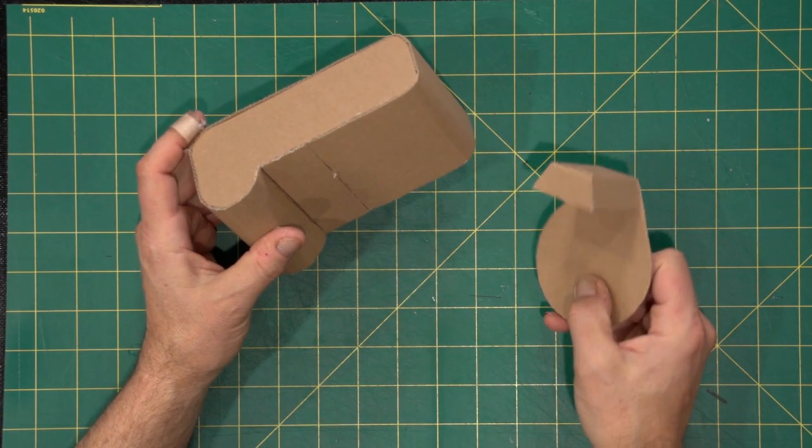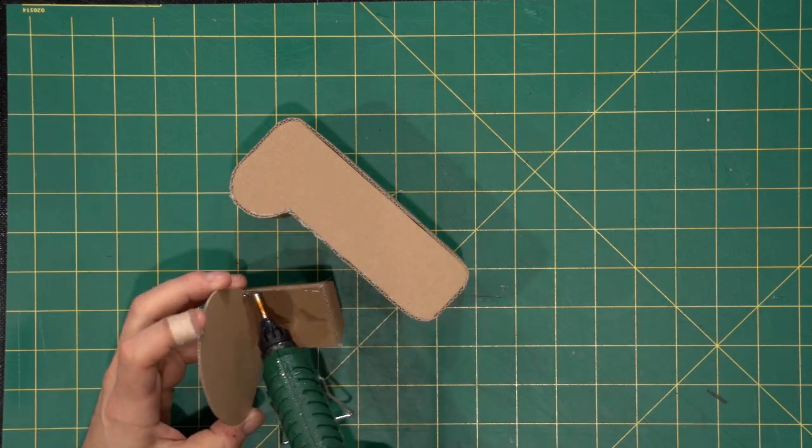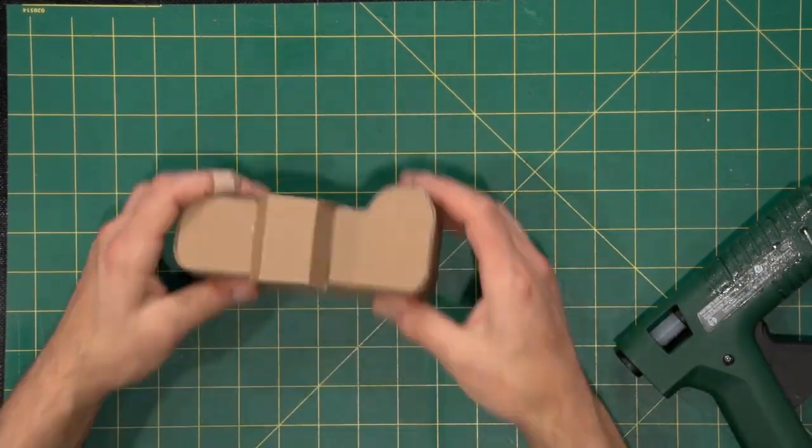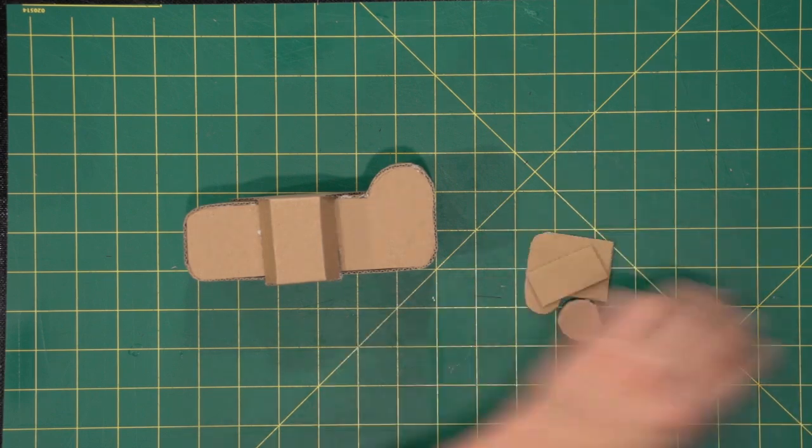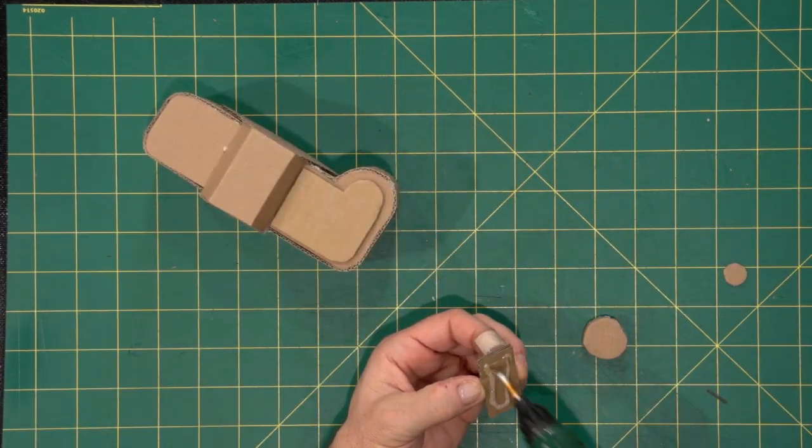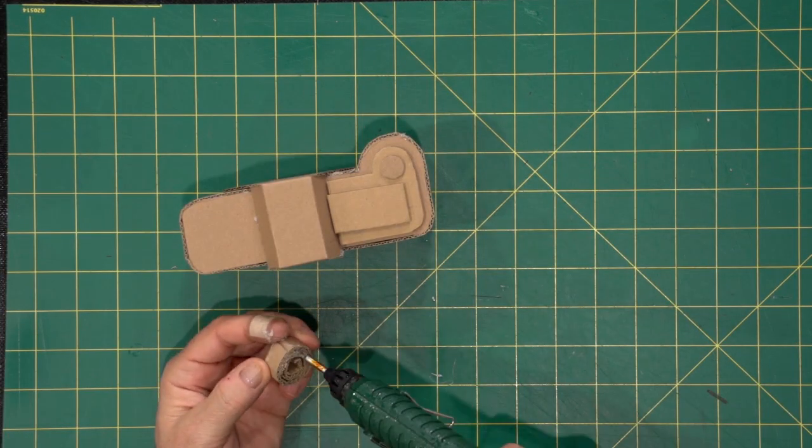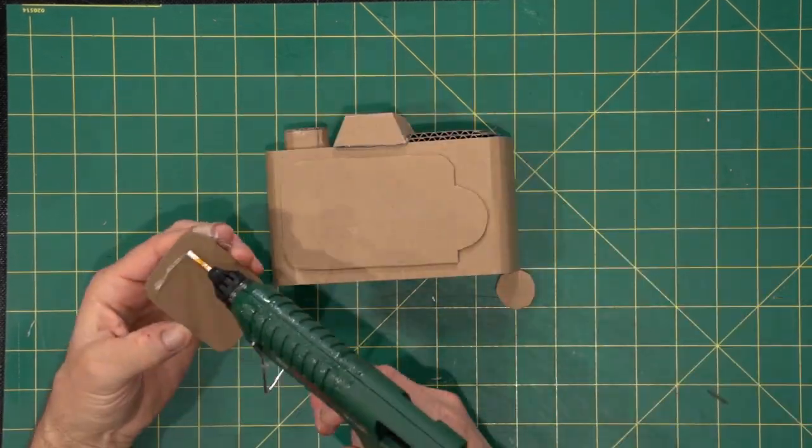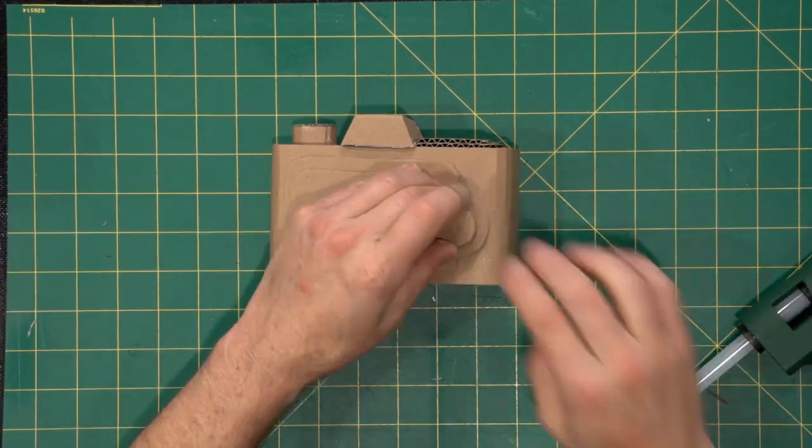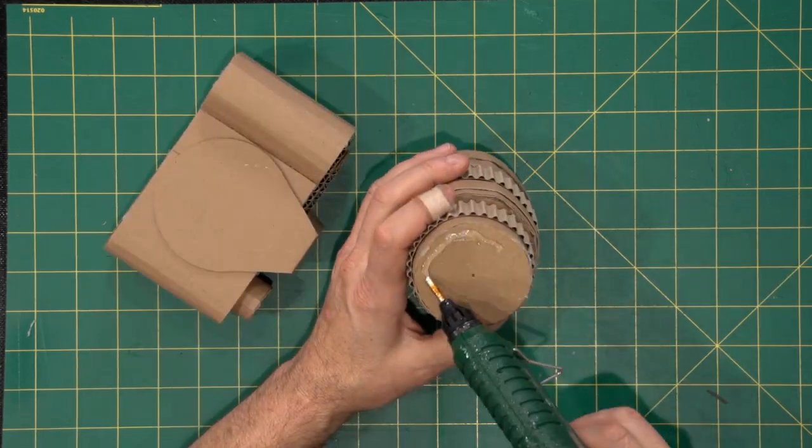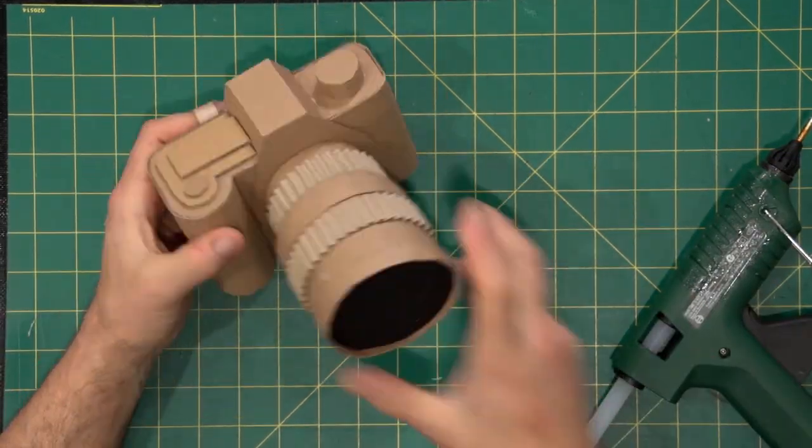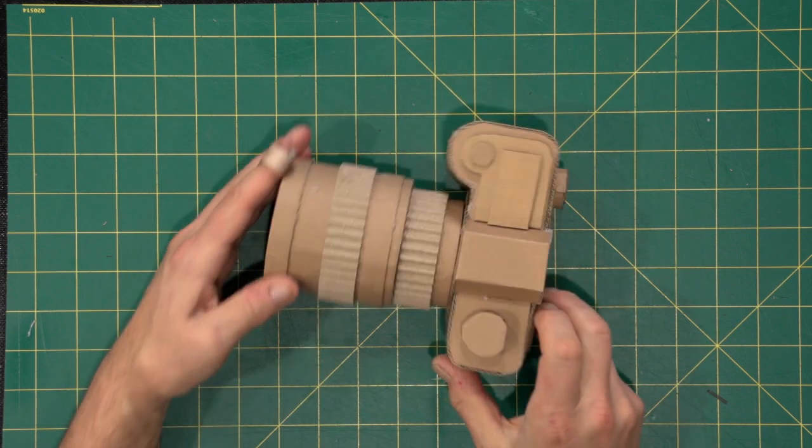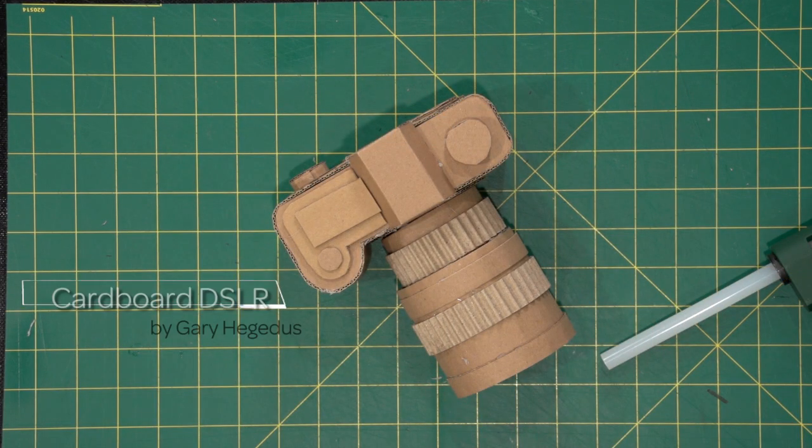First thing to go on is the viewfinder assembly. Then we're ready to put the top components on: component number two, three, then the shutter button, and finally the function button. Then the components on the back, component number eight, then the monitor window, and finally the selector wheel. Last of all, plenty of glue on the lens. Make sure that the seam is at the bottom. And we're done. Thanks for watching.